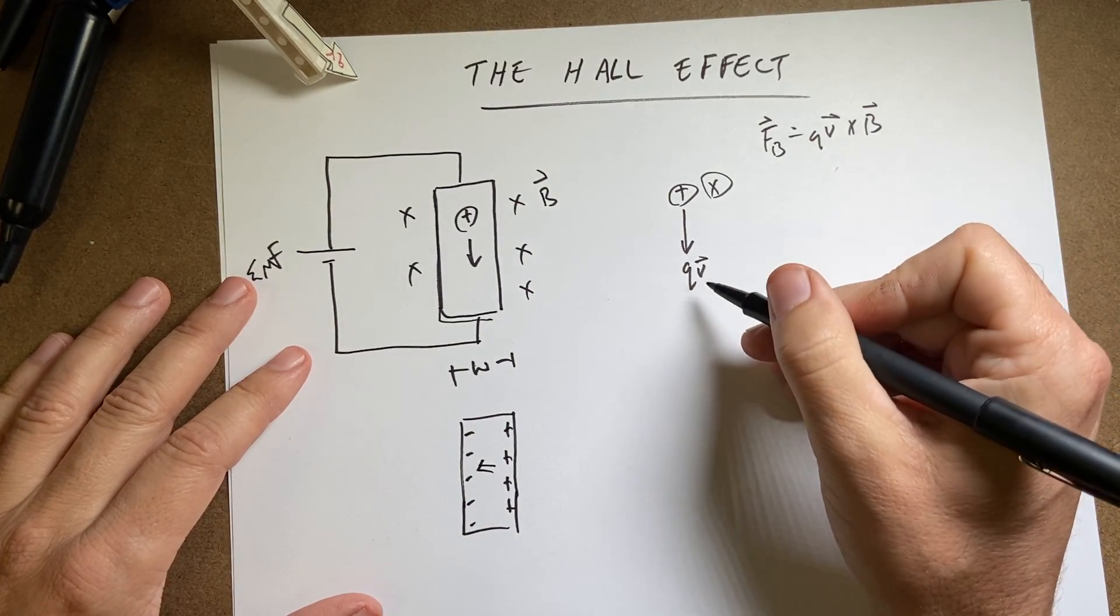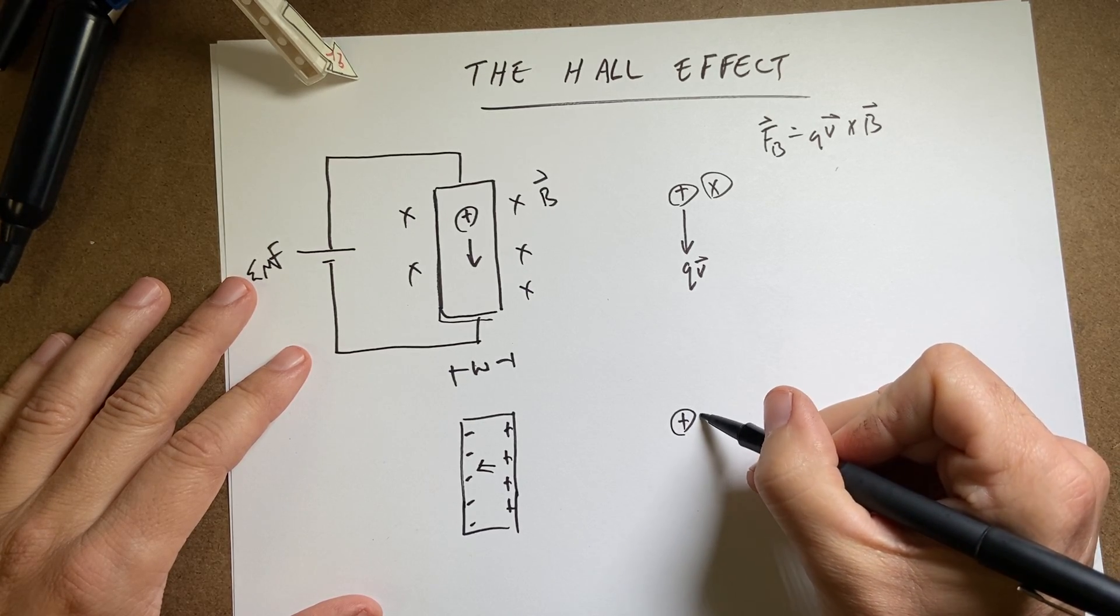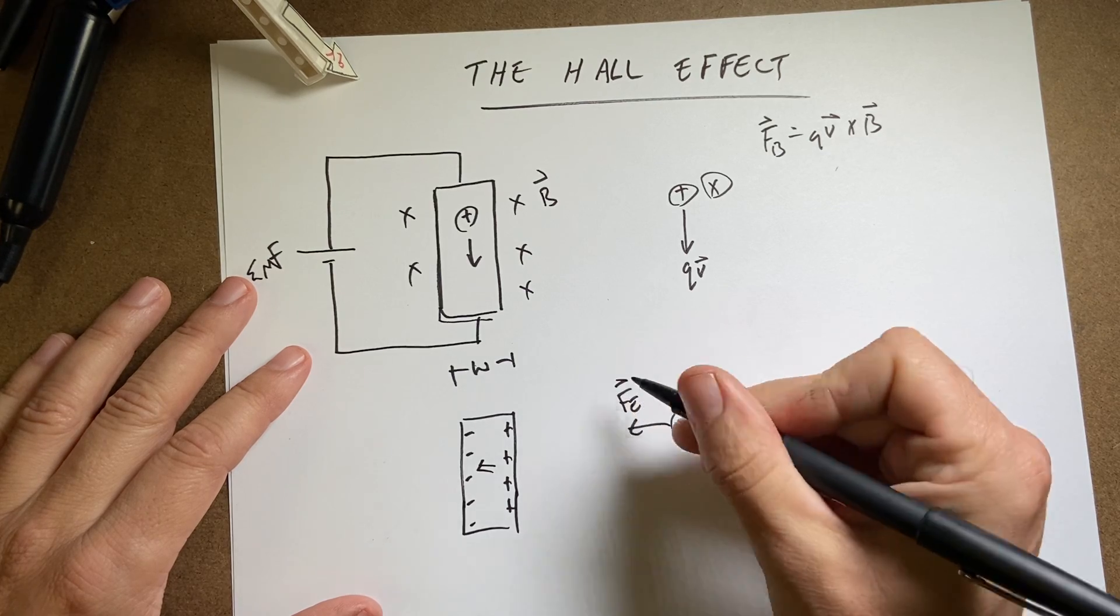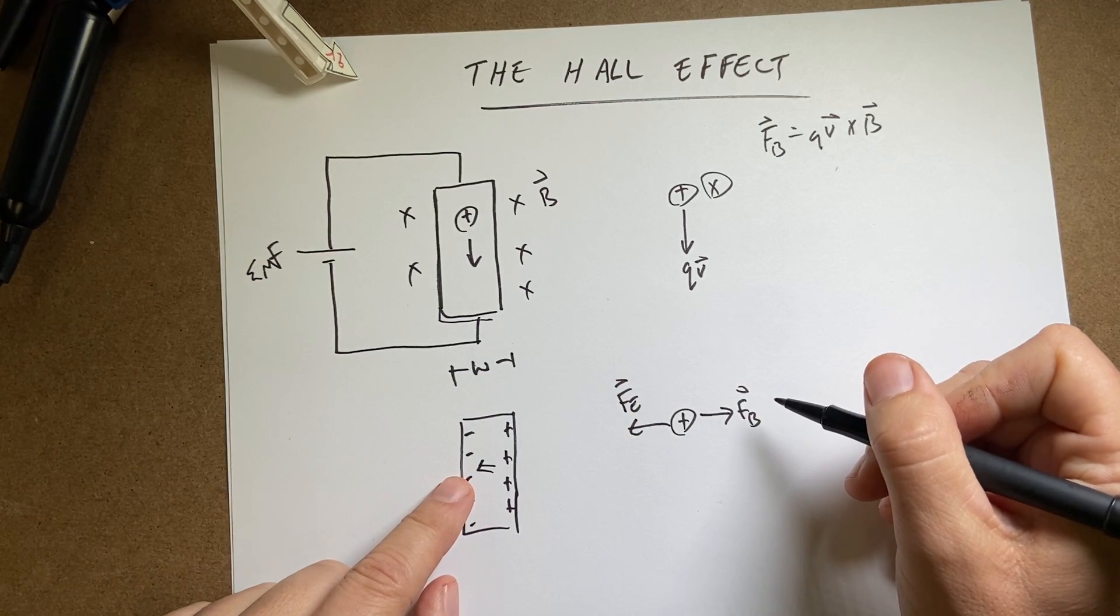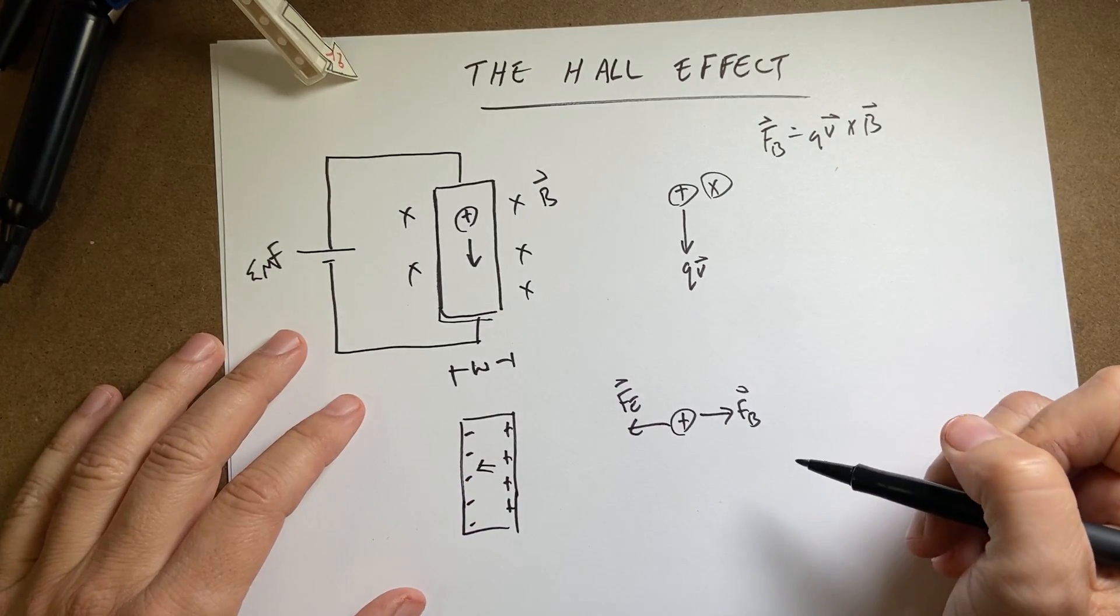So I'm going to have two forces on this. I'm going to have the magnetic force pushing this way, FB, and the electric force pushing this way, FE. And that will continue to happen to have charges build up over here until those two forces are the same.